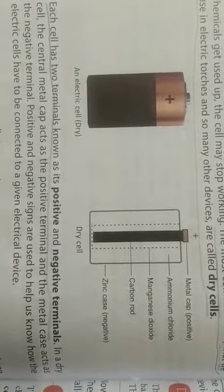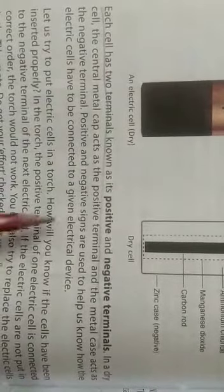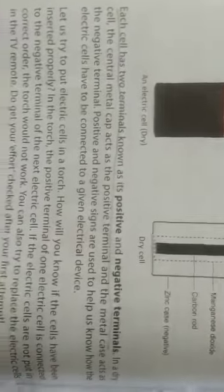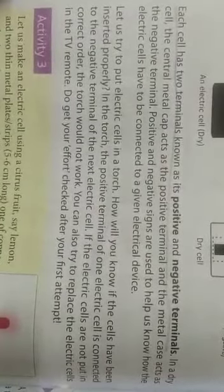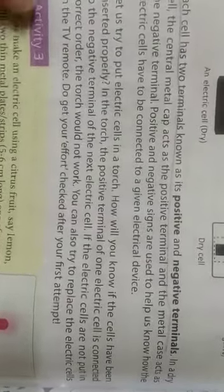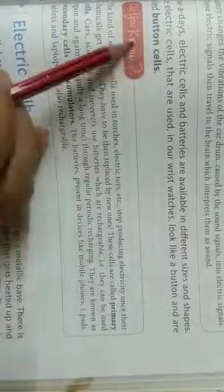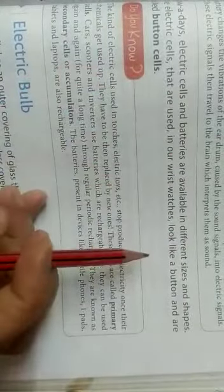Dry cells are mostly used in electric torches, having two ends: positive and negative. For activity three, you can try to make a potato battery. Now we have the combination of cells, then we have button cells.